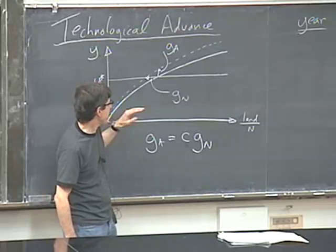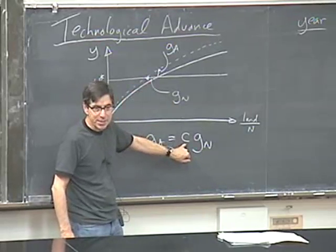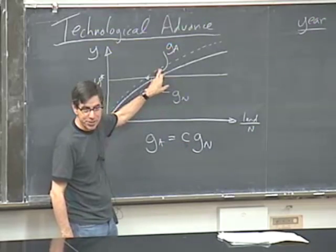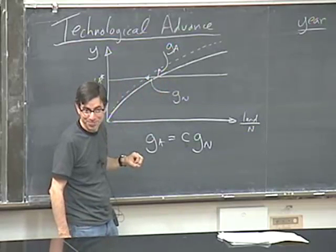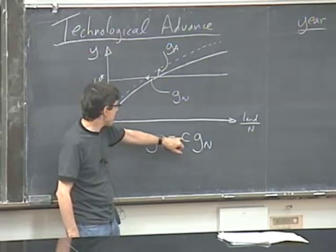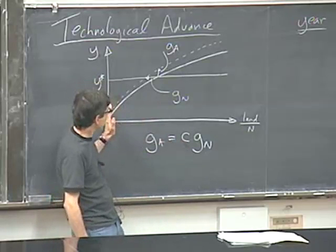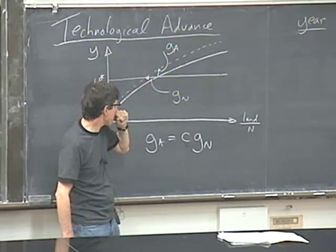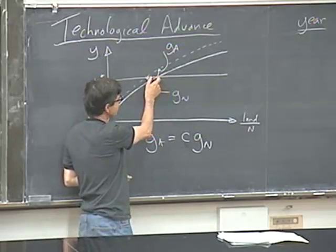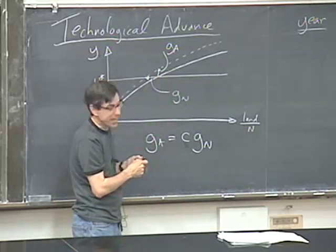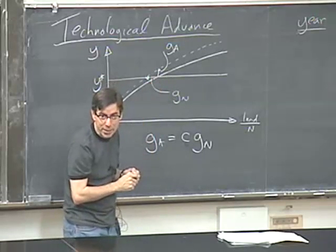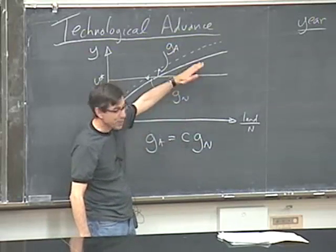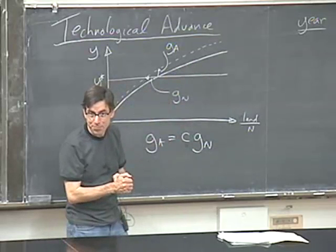C is actually measuring the curvature of the output-land relationship. If the relationship has very little curvature, C would be small, meaning modest changes in efficiency would produce big changes in population. If C is very large, that curve is very steeply curved, and consequently modest changes in efficiency A will produce very small changes in population. So there's actually a lot of information embodied in this simple relationship, because it's really describing what the production relationship looks like in any society.